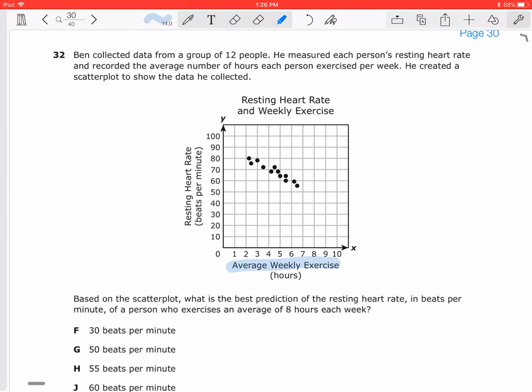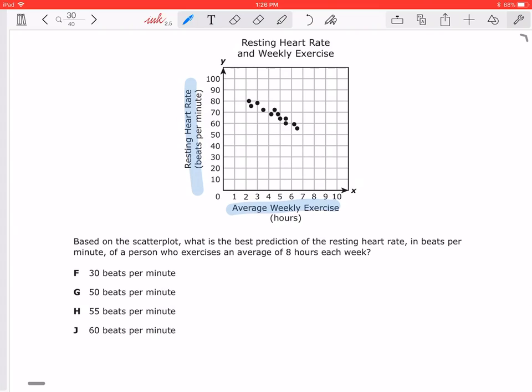Now we have our values, the average weekly exercise is our X, and the BPM rates per minute is our Y. Based on the scatter plot, what is the best prediction of the resting heart rate in beats per minute when they exercise on average of 8 hours per week? So again, I'm going to draw my trend line.